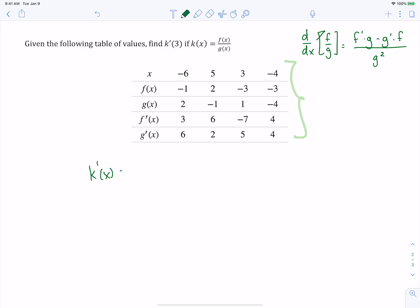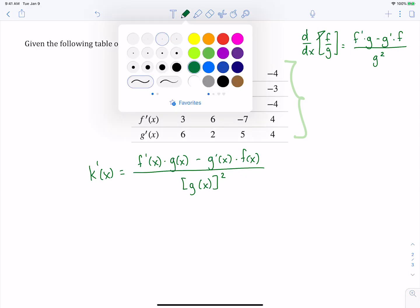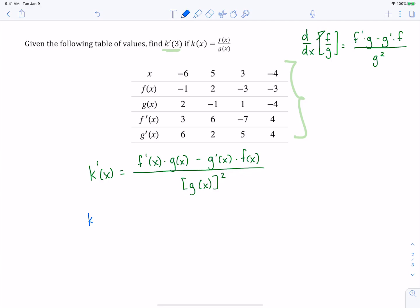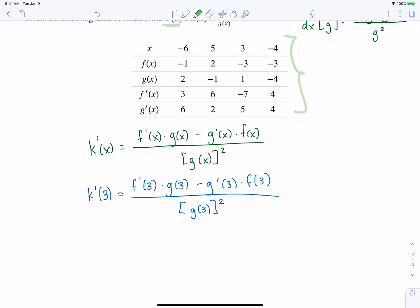So for this function here, k of x, its derivative is going to be f prime of x times g of x minus g prime of x times f of x over the function g of x squared. Now we're concerned with, in particular, k prime of 3. So k prime of 3, it's going to be f prime of 3 times g of 3 minus g prime of 3 times f of 3 over g of 3 squared. So in this problem, what we really need to concern ourselves is just this column of our table that gives us our x values being 3 and what all of our outputs are.